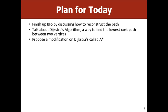Today we're going to finish up breadth-first search, specifically talking about how to reconstruct the path once you find the node you're searching for. Then we'll talk about Dijkstra's algorithm, which solves the problem of finding the least cost path in terms of edge weights. After that, we'll start talking about A*, which is basically a new and improved version of Dijkstra's that runs a little bit faster.